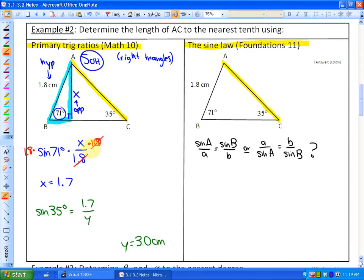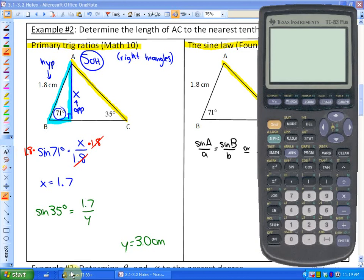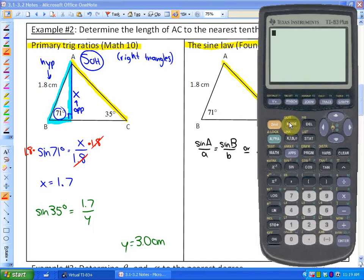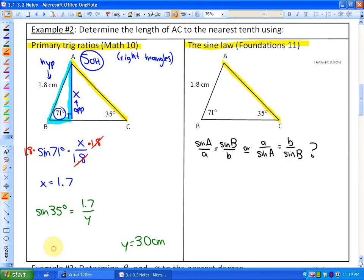And I'll pull up my calculator. And again, make sure that you are always in degree mode. If you're not, then you have to set it to degree mode. Otherwise, your calculator will do some wrong calculations. So if I do 1.8 times sin 71, I'll get an answer of approximately 1.7. So that's the length that I have right here. So this is approximately 1.7.